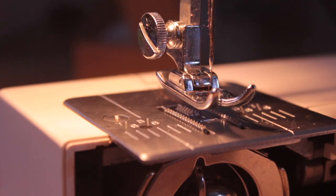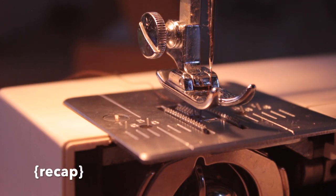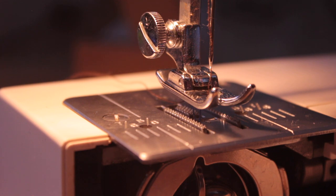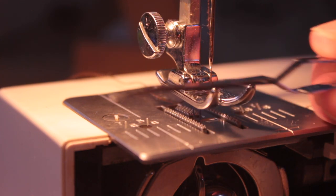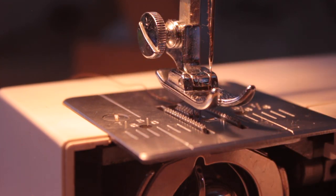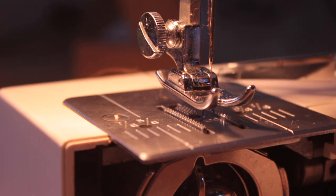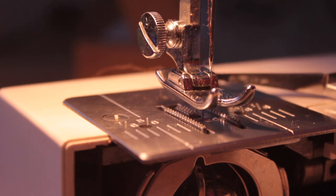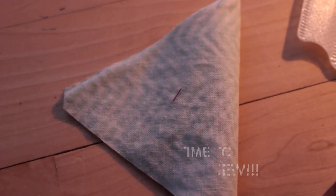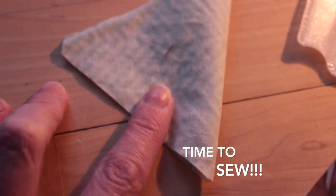Here I'm using tweezers from Dollar Tree. I grab the blue thread, pull it out and it comes up the same location where the brown thread goes down to sew. This means you have successfully loaded your side loading bobbin machine.